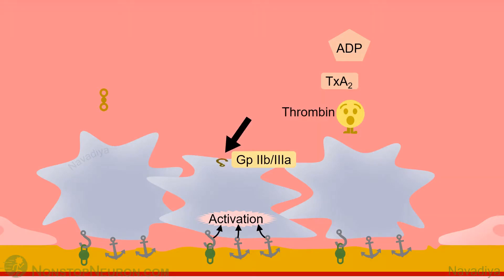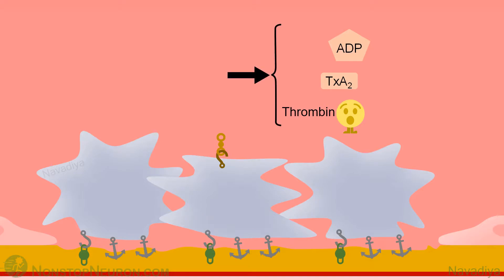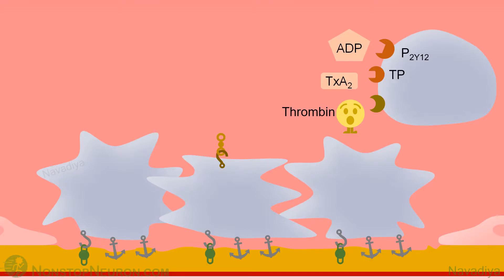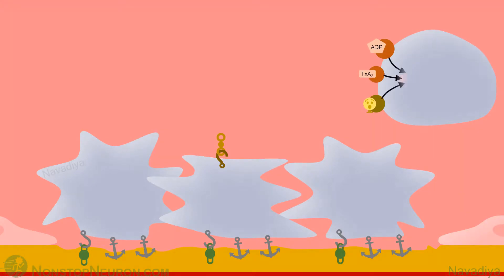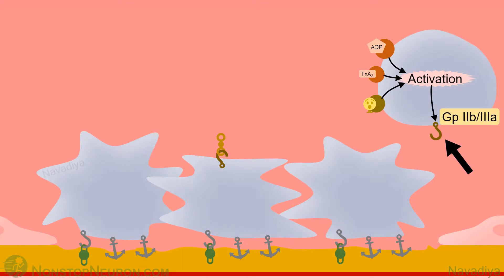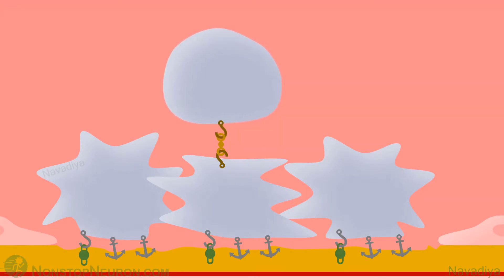Lastly, activation of platelets causes conformational changes in the surface receptor glycoprotein 2b3a, which is now capable of binding with fibrinogen. These molecules — ADP, thromboxane A2, and thrombin — help in recruiting more platelets from circulation. Circulating platelets have receptors like P2Y12 for ADP, thromboxane A2 receptors for thromboxane A2, and protease activated receptor 1 for thrombin. When activated by their respective ligands, these receptors cause activation of the platelet. The activated platelet undergoes conformational changes in glycoprotein 2b3a, which binds with fibrinogen bound to an already activated platelet.